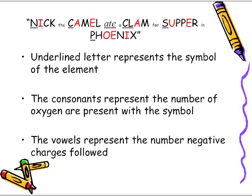The underlined letter represents the symbol of the element. So the letter N in "Nick" represents nitrogen. The C in "camel" represents carbon. CL — written as lowercase C lowercase L — represents chlorine. The S represents sulfur, and the P represents phosphorus. That's what the underlined letter in each of those words stands for.